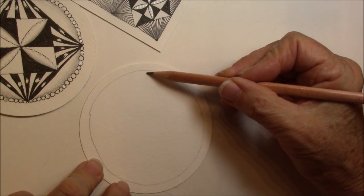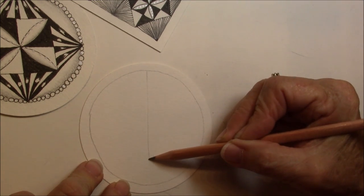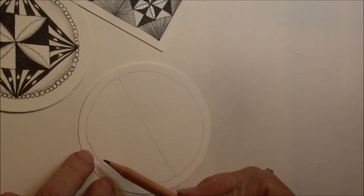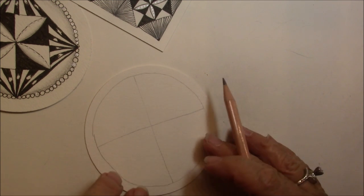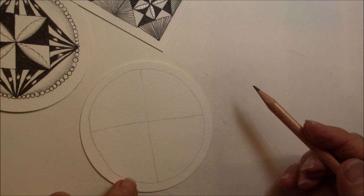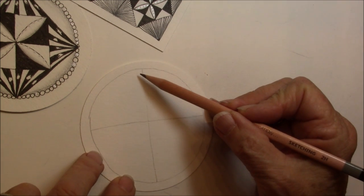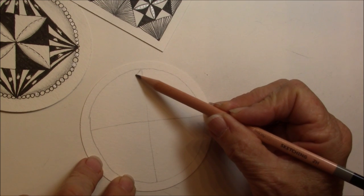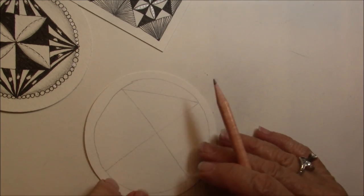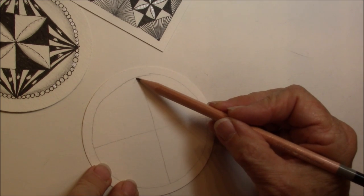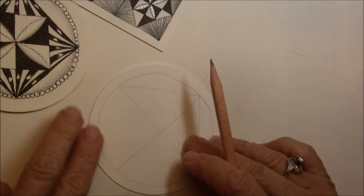Now we're just going to draw a line down through the center, and then across, so that we have a cross in there. Now I'm going to come and I'm going to go from this point over to here, and I really could do that with my pen, but I'm just going to do it with my pencil right now.